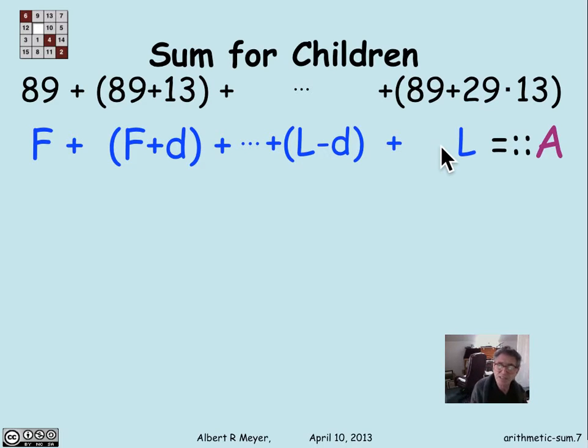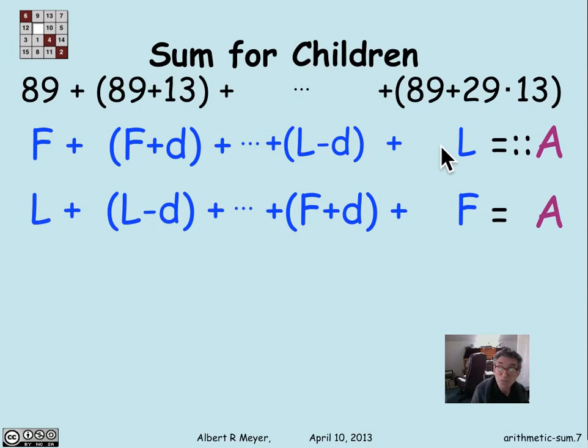One of the standard tricks to find nice formulas for sums is to find an arithmetic relation between the sum and a slight perturbation of the sum. In this case, I'm just going to write the sum backwards. So it's the same sum A, but written where the first term is last and the last term is first. And now notice what happens when I add up these two sums.